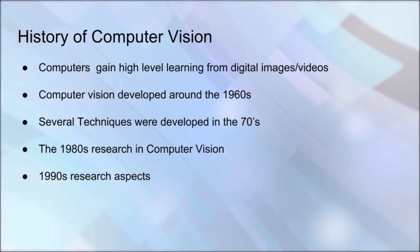During the 70s, some of the techniques that laid out the foundation for computer vision were created and further developed, including edge extraction, line labeling, non-polyhedral and polyhedral modeling, the representation of objects as connections of smaller objects, optical flow, and motion estimation. The 1980s took a drastic change since it based its research more on mathematical analysis and the quantitative aspect of computer vision.